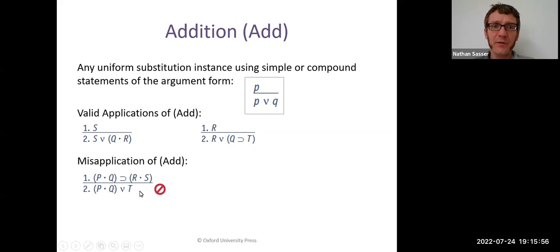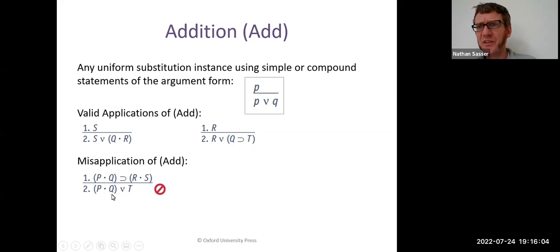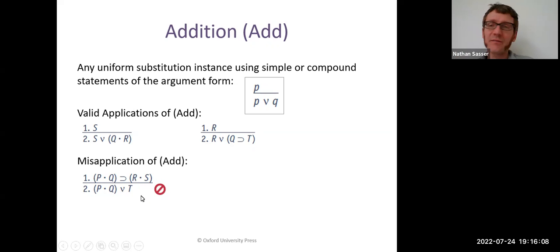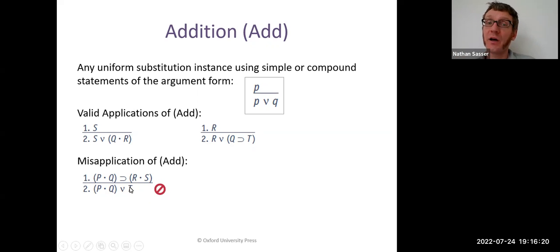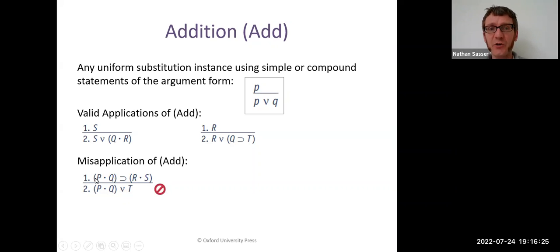A misapplication: the premise is 'if P and Q, then R and S', and then the conclusion attempted is 'P and Q, or T'. The mistake is that they only took part of the premise and made it a disjunction. You have to make the whole premise into a disjunction. So if you want to apply addition to this, you'd have to put brackets around the whole conditional and then say 'or T'.